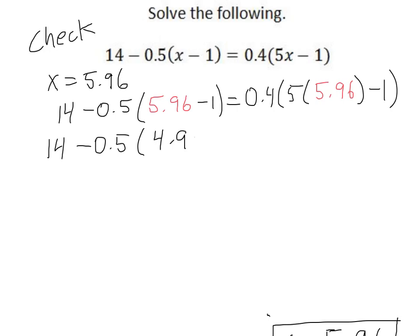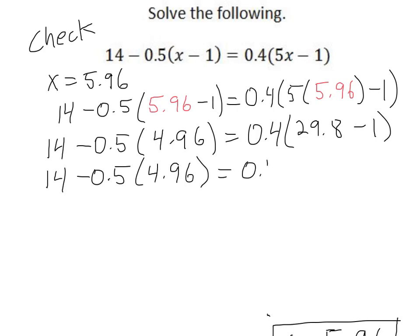We'd have 14 minus 0.5 times, 5.96 minus 1 is 4.96, equals, again inside the parentheses first, 5 times 5.96 is 29.8 and subtract 1. Okay, still a little more inside the parentheses on the right so I'm just going to copy everything else down. We have 29.8 minus 1 is 28.8.